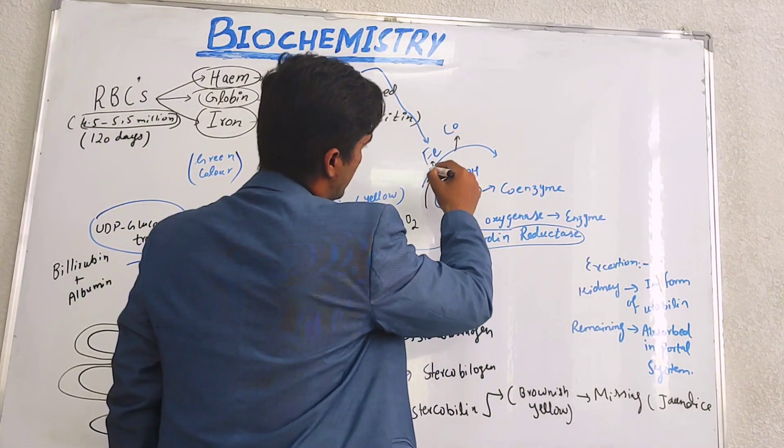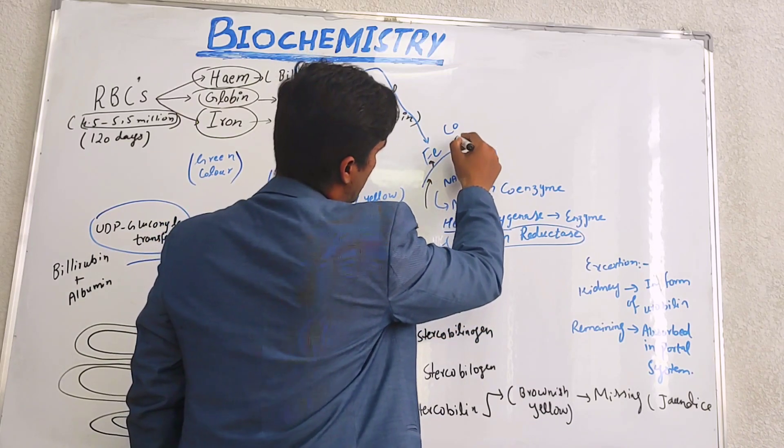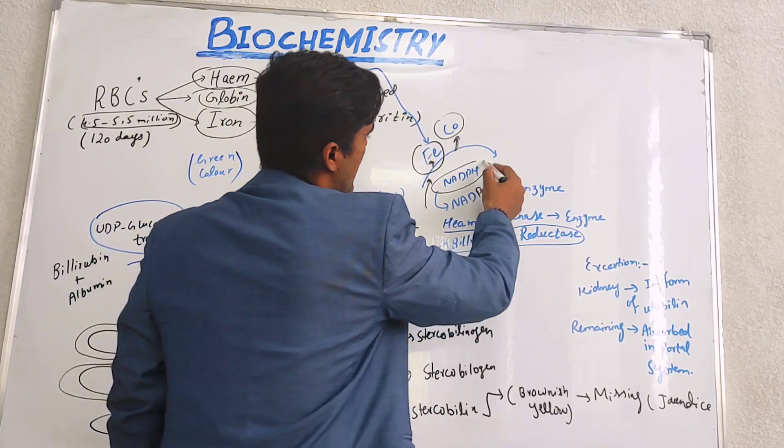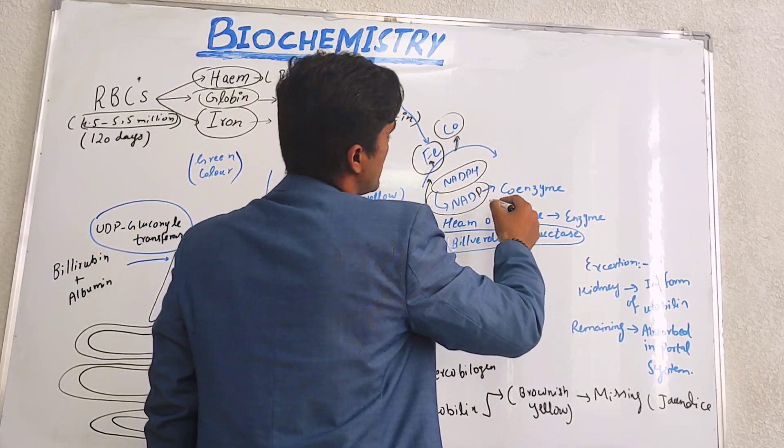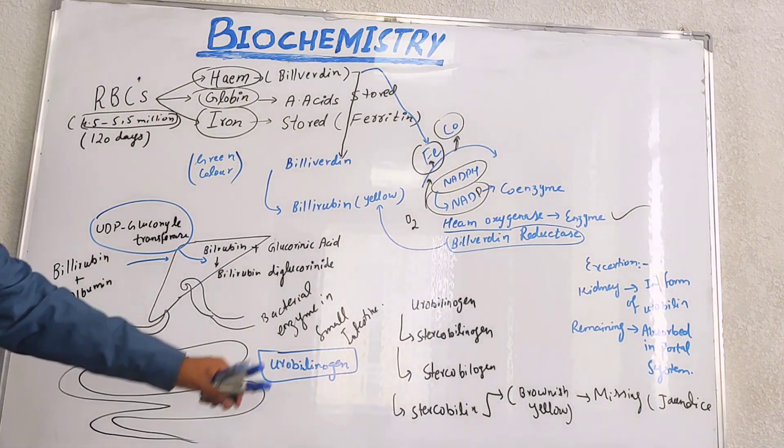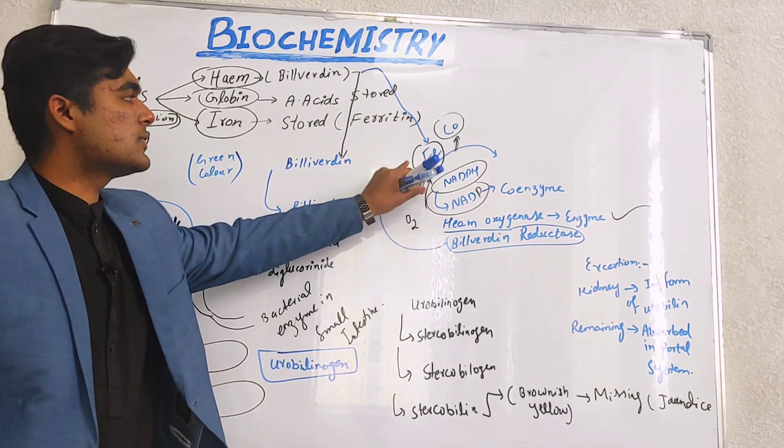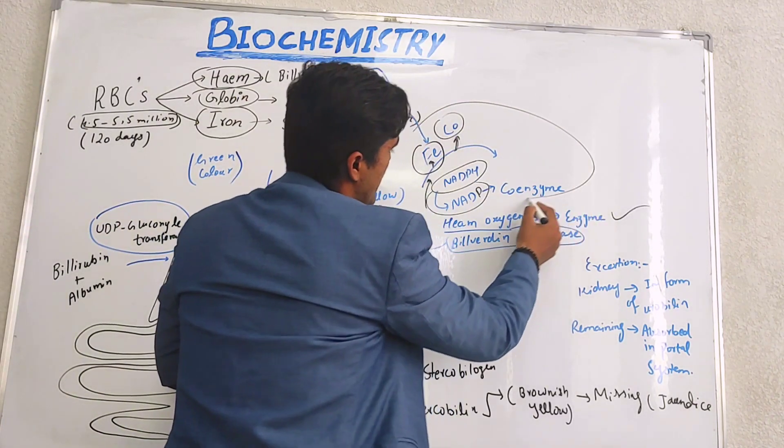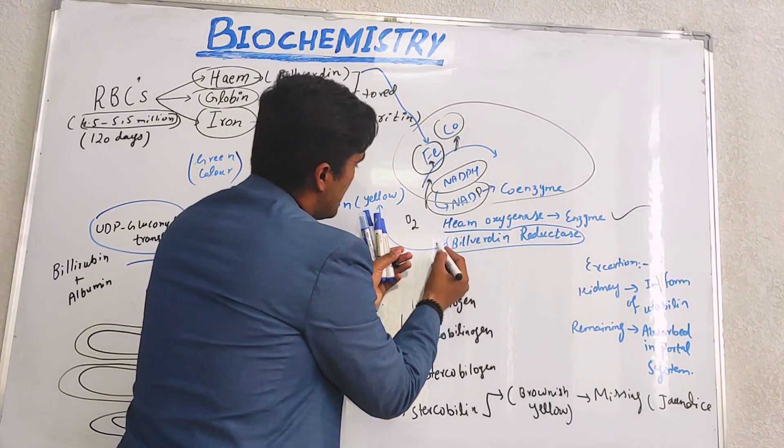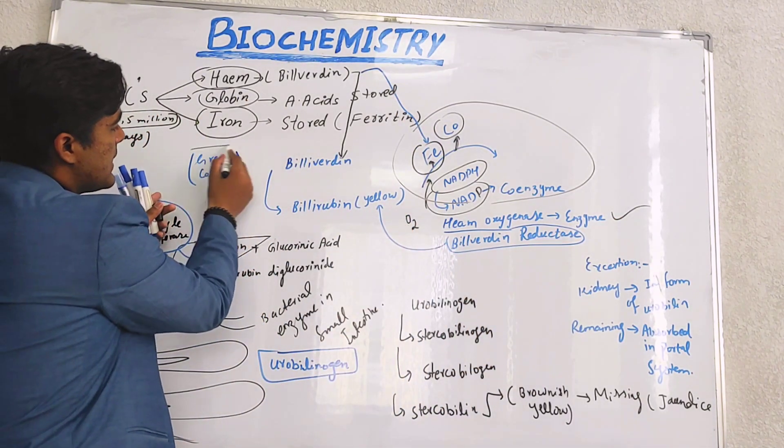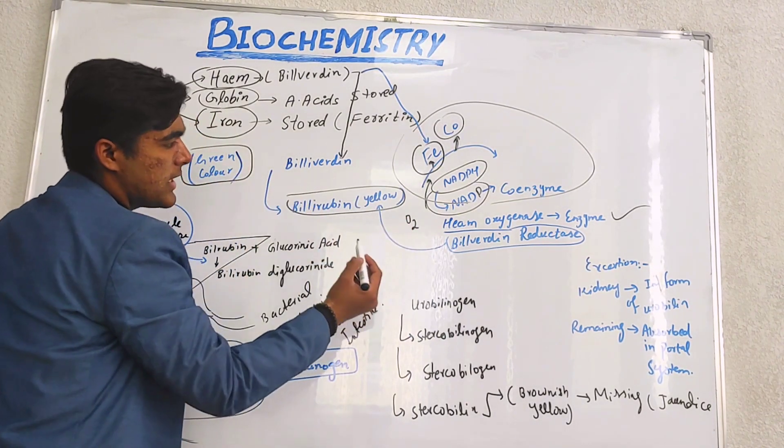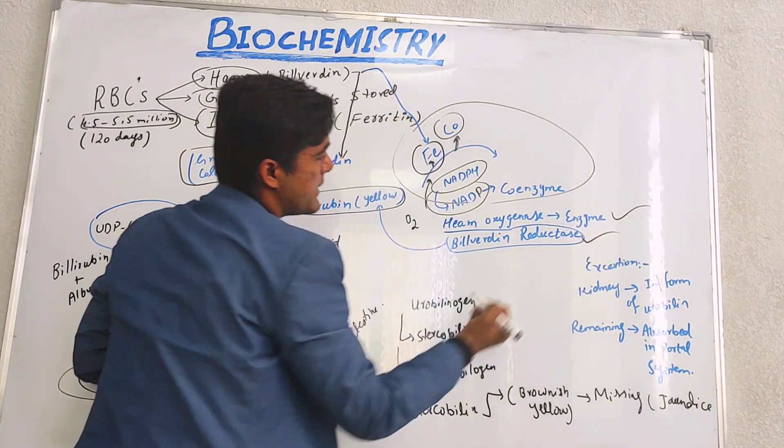We have a reaction in which iron and carbon monoxide molecules are removed when NADPH is converted into NADP using the enzyme heme oxygenase. This process will give us biliverdin, which is basically a green colored pigment.